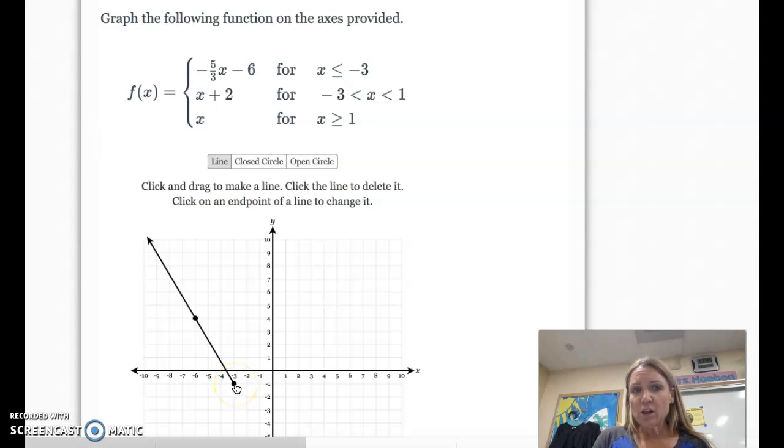So we're going to leave it closed, even though this indicates that it should be open. But because it's sharing with a point that's already closed, we'll just leave it closed. And then the slope is 1 over 1. So I'm going to go up 1 over 1, up 1 over 1. Oh, I should keep going until I get to 1. So up 1 over 1, up 1 over 1. Okay. All right.